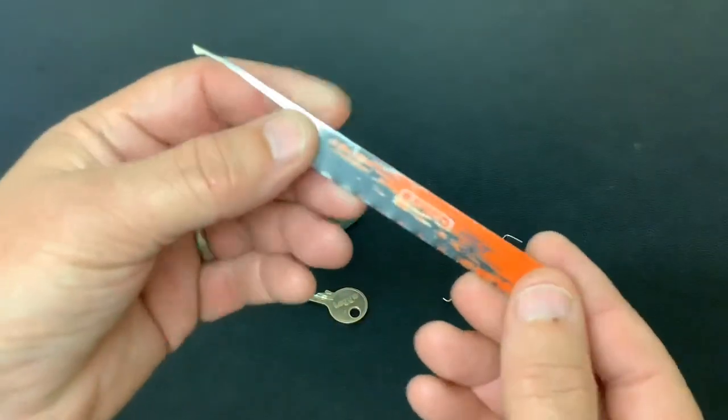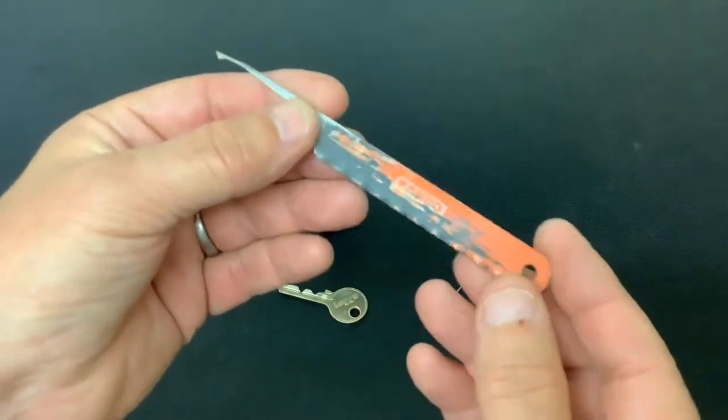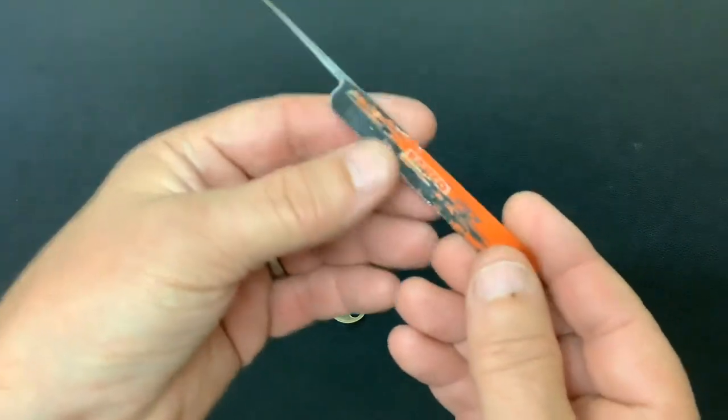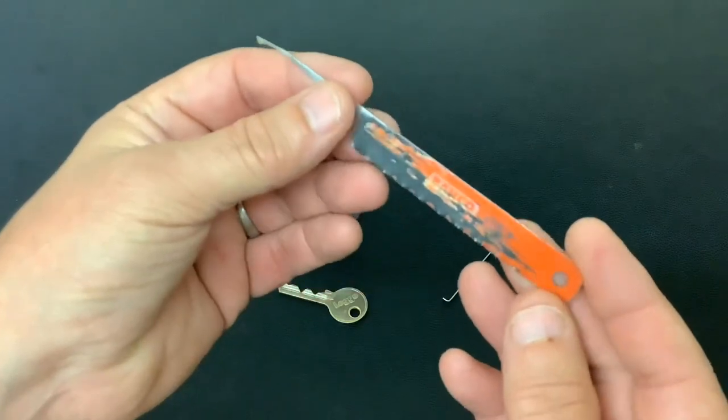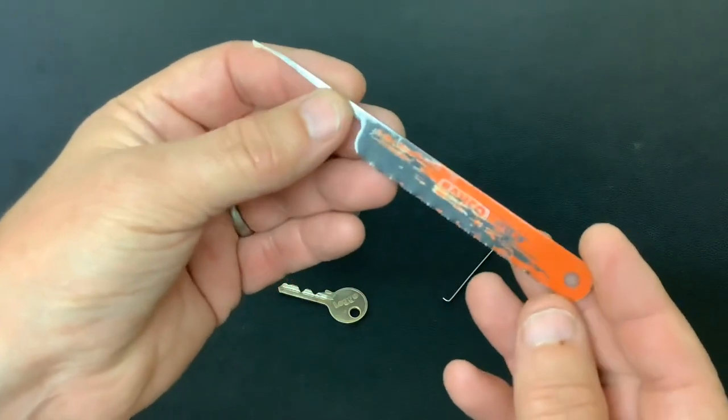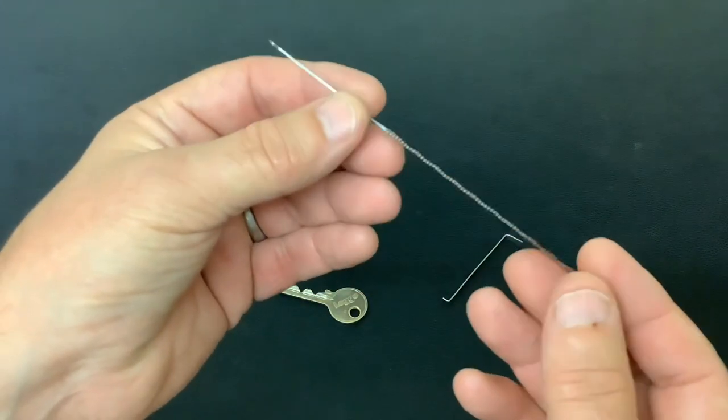I made this pick the other day and picked open an Archibald Kenrick euro cylinder with it. I did say I was going to smooth it down and finish it off a little bit, but as you can see I've not got around to doing that yet. It's still in a rough and ready state.